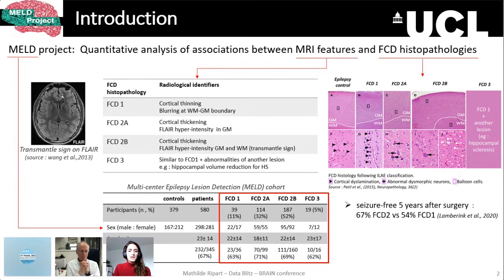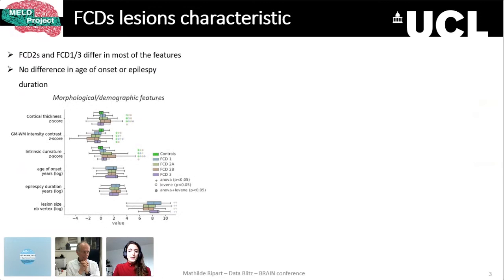For that, we extracted surface-based morphological and intensity features from T1-weighted and FLAIR contrast, alongside demographic information such as the age of onset. For more information about the methods behind these results, I invite you to have a look at my poster.